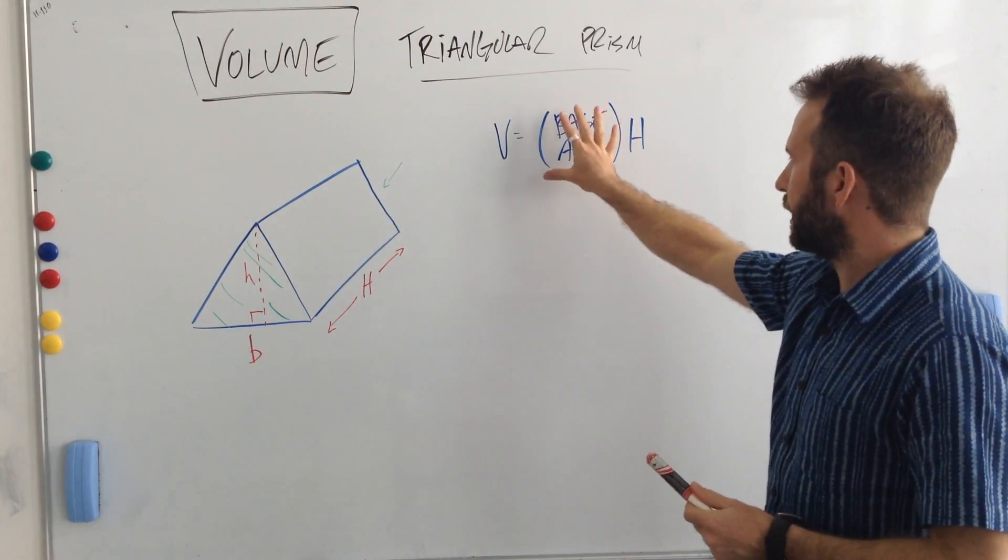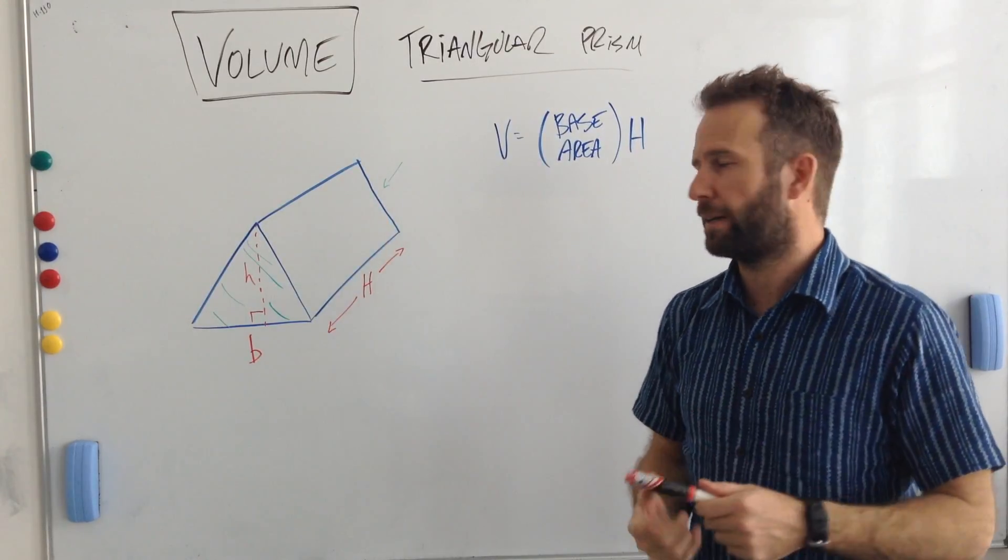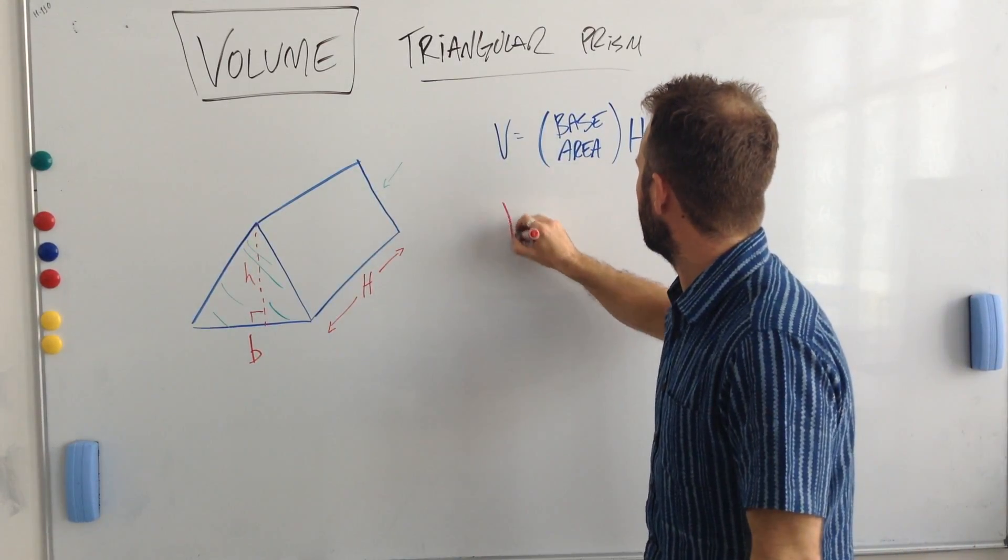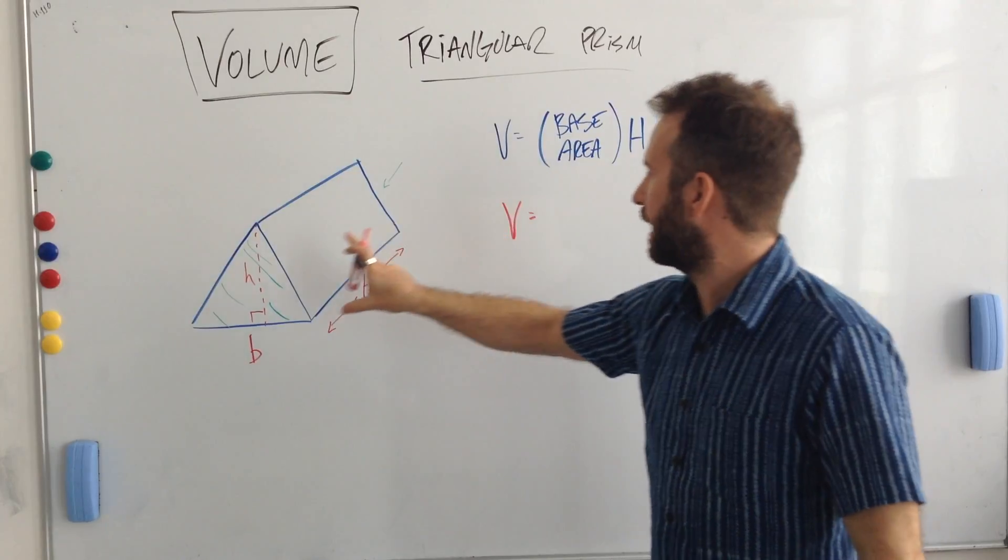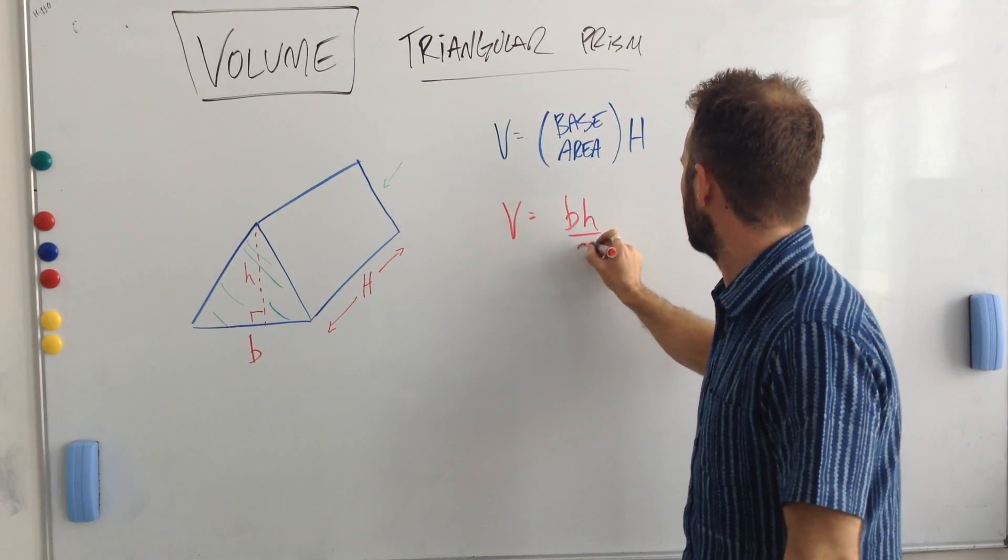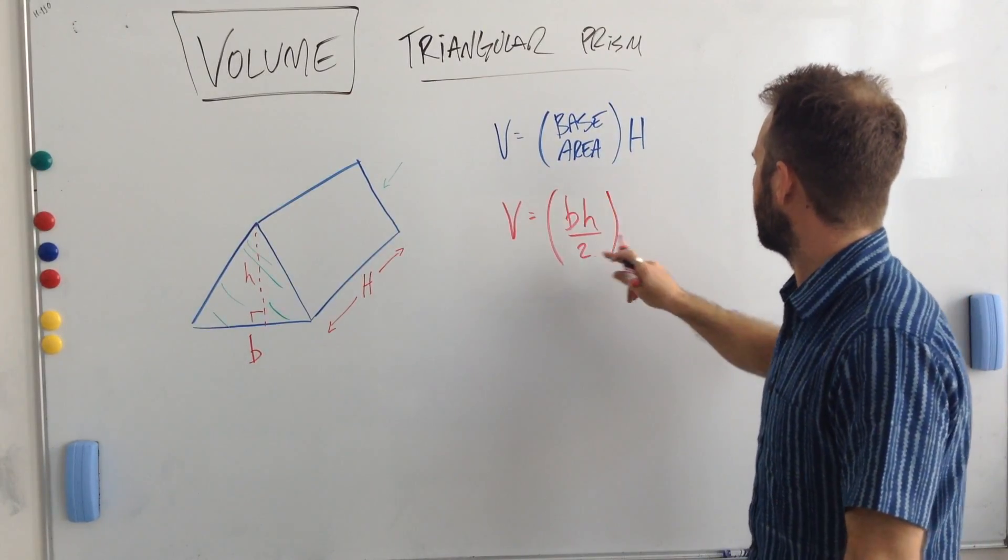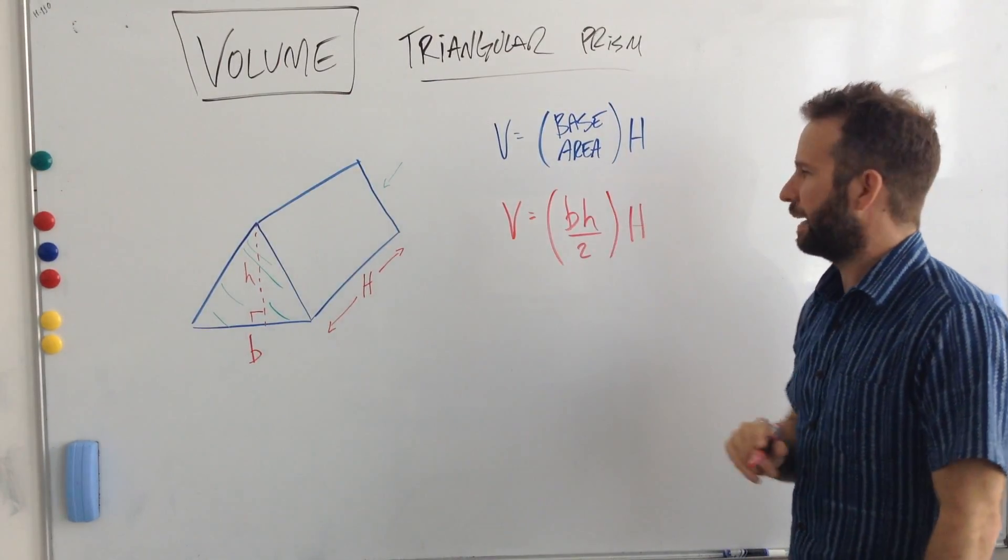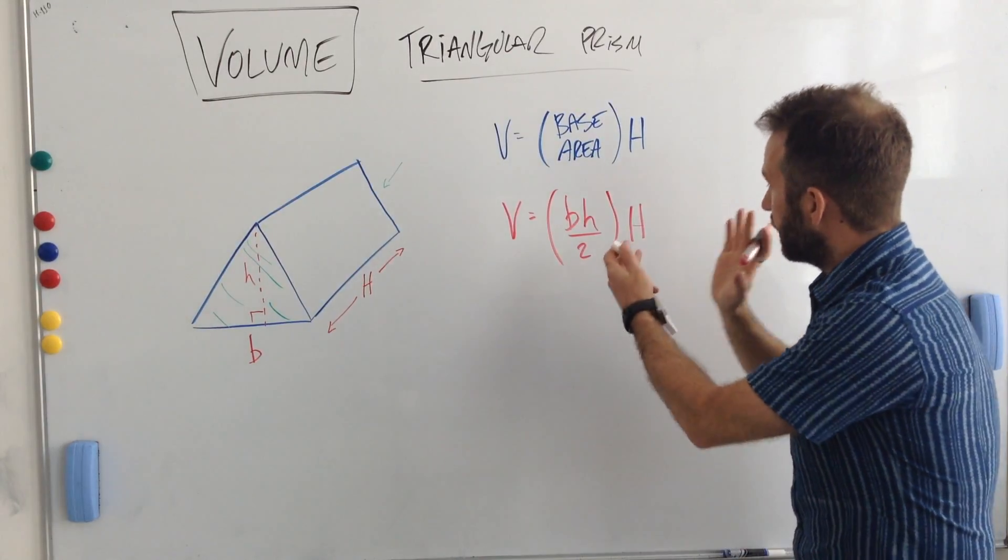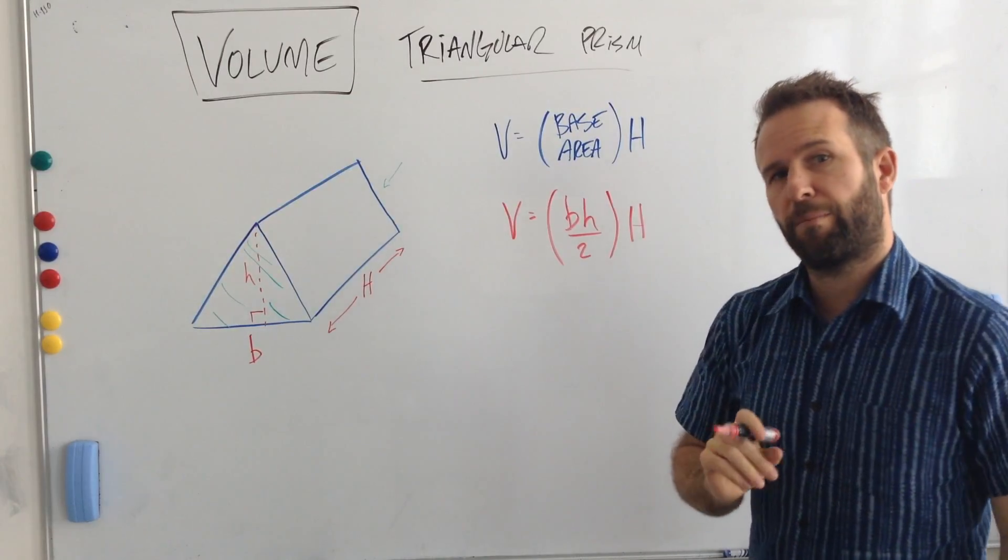So let's adjust our formula to fit the triangular prism that we're dealing with. So instead of just writing it as base area, I know it's a triangle, so I know that I need to have the basic triangular formula. Base times height divided by 2, and of course that's going to get multiplied by big H. So this is my standard triangular prism volume formula.